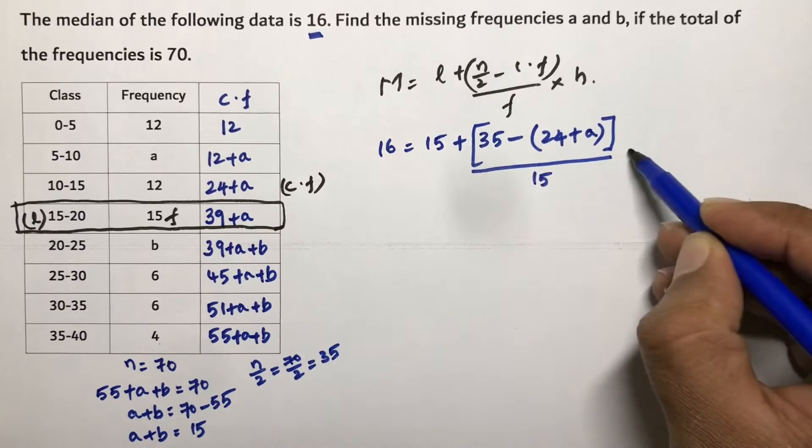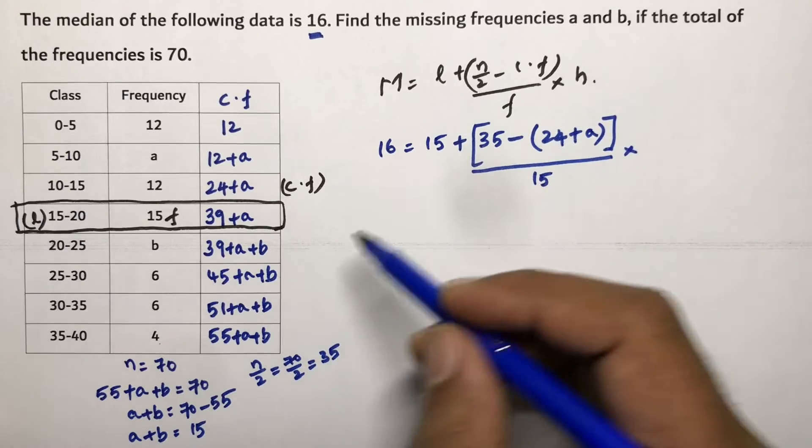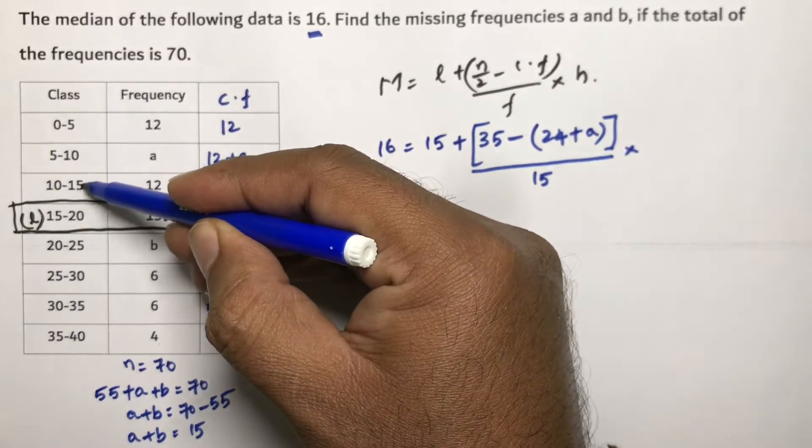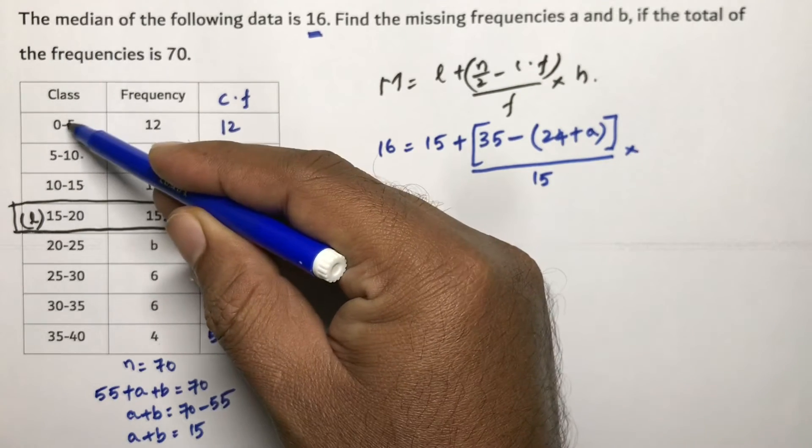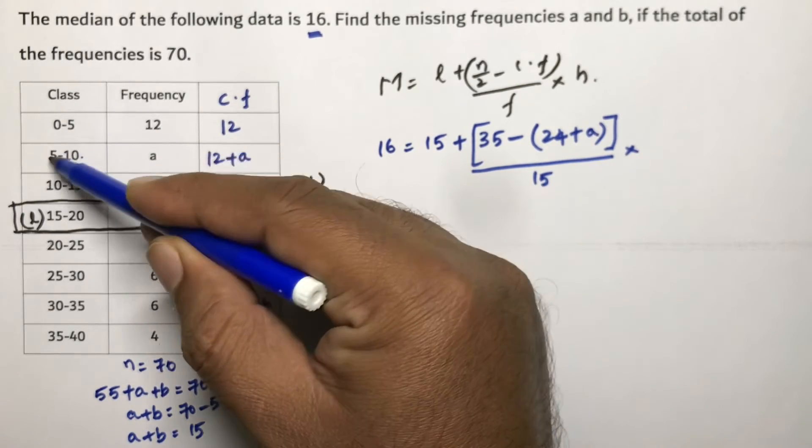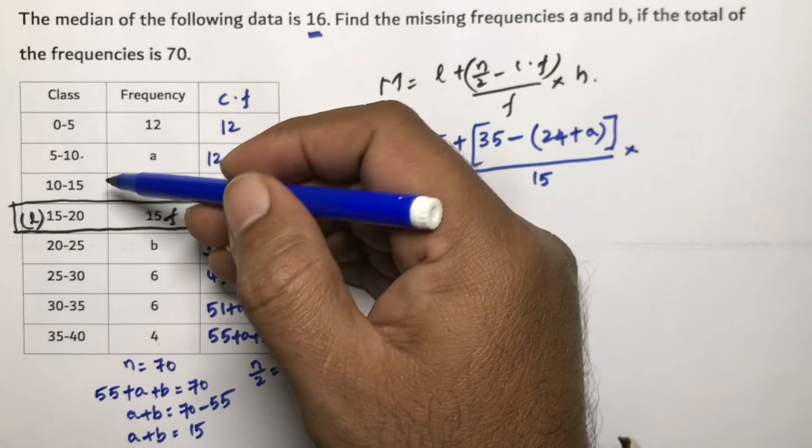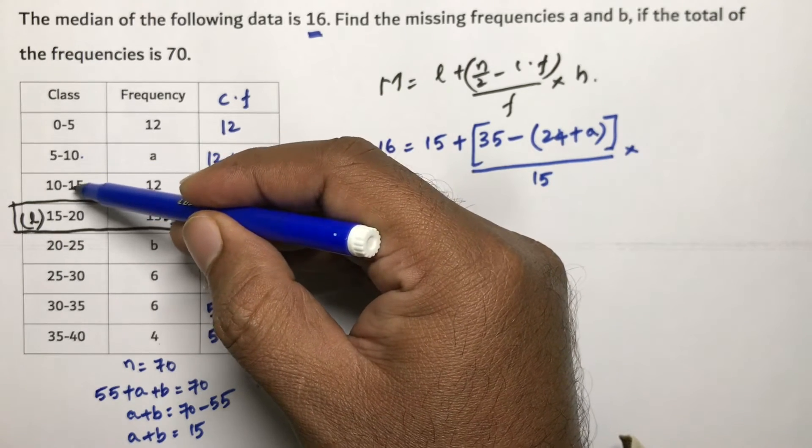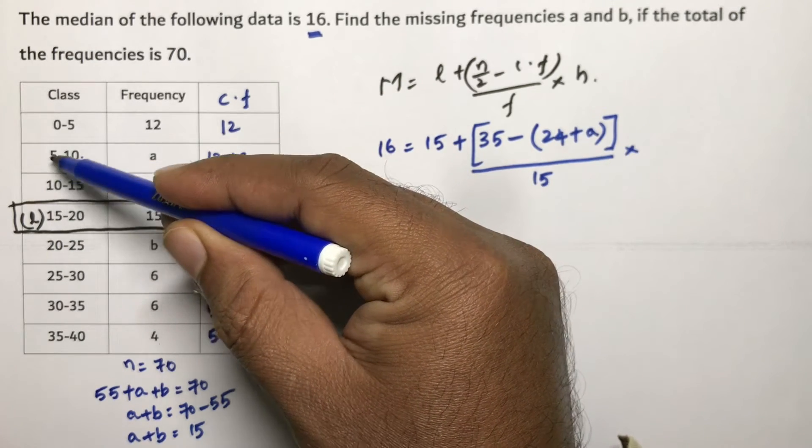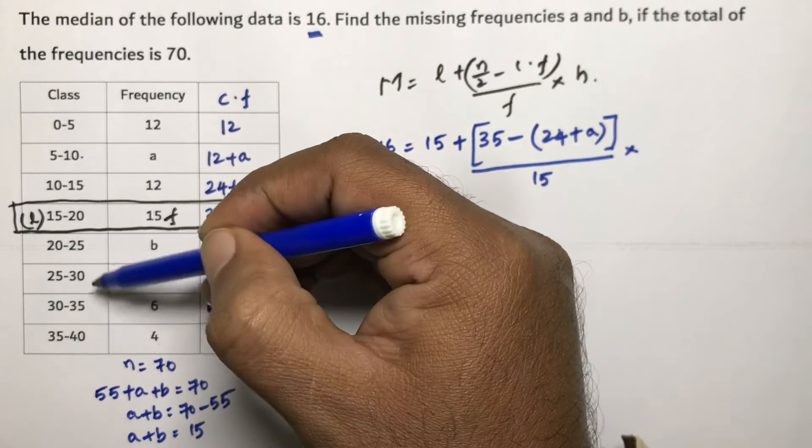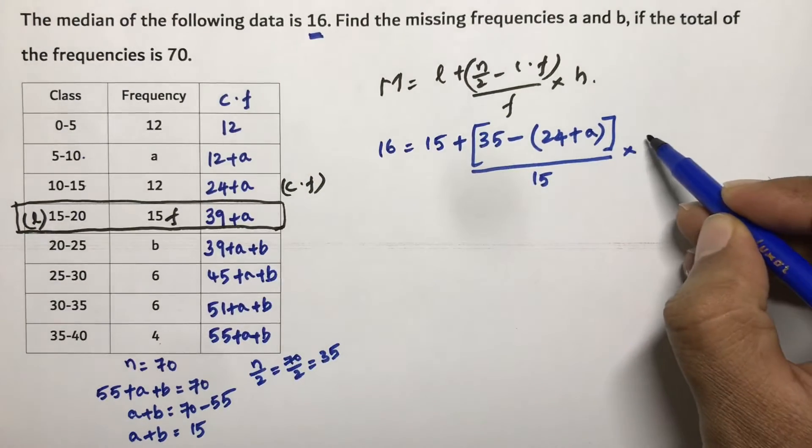To calculate H, you need to subtract from down to up. Because if you do from right to left, 10 minus 5, sometimes if it is non-continuous class it may go wrong. So always do from down to up like 10 minus 5, 30 minus 25. So here H value is 5. 10 minus 5 is 5.